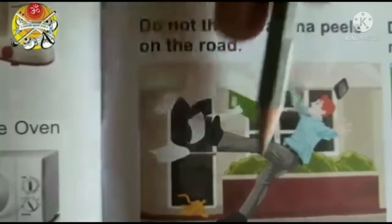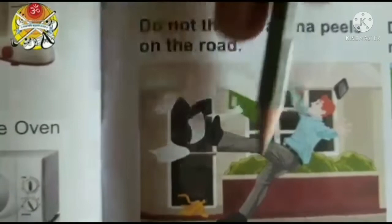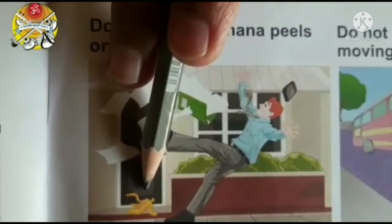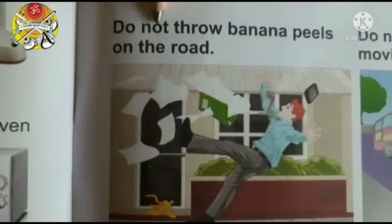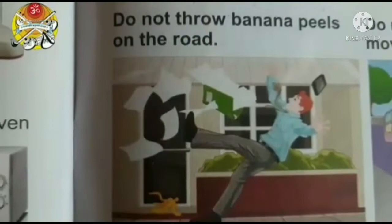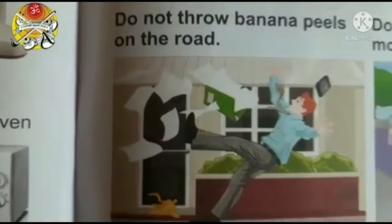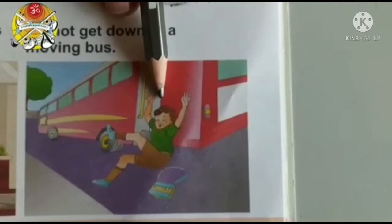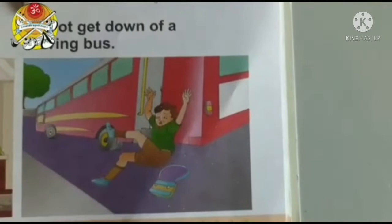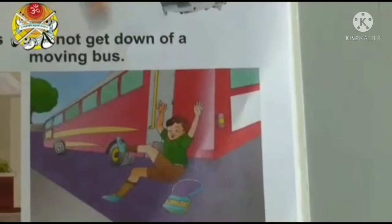Now children, look at this picture. See, this man has put his foot on a banana peel and he is going to fall down. So what is the sentence? Do not throw banana peels on the road. Now the next one — here the boy is getting down from a moving bus. It is very dangerous. Do not get down from a moving bus or a car.